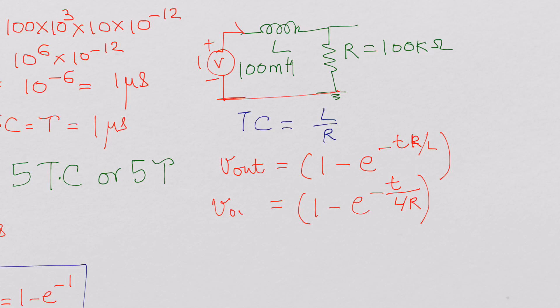If you looked at the voltage across the inductor, that V L of T would have been 1, the voltage multiplied by e power minus T over L over R.